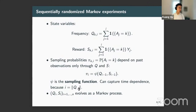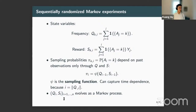Under this definition, this type of policy induces a Markov chain — specifically the joint process of frequency and rewards. Together (Q, S) evolves as a Markov chain.